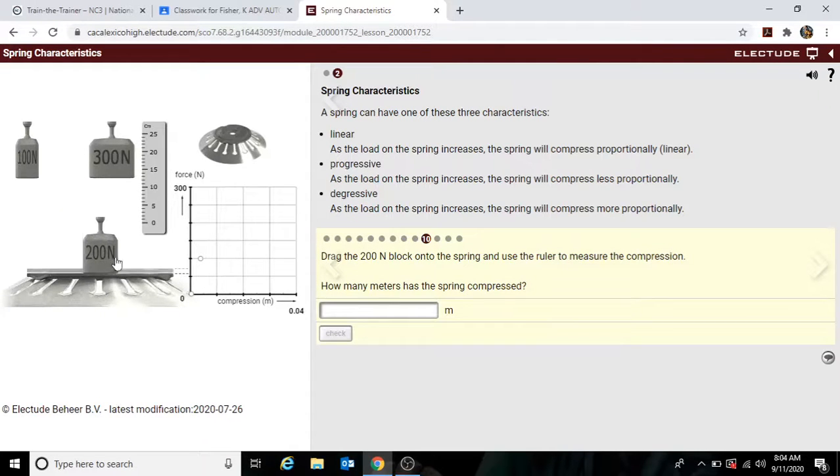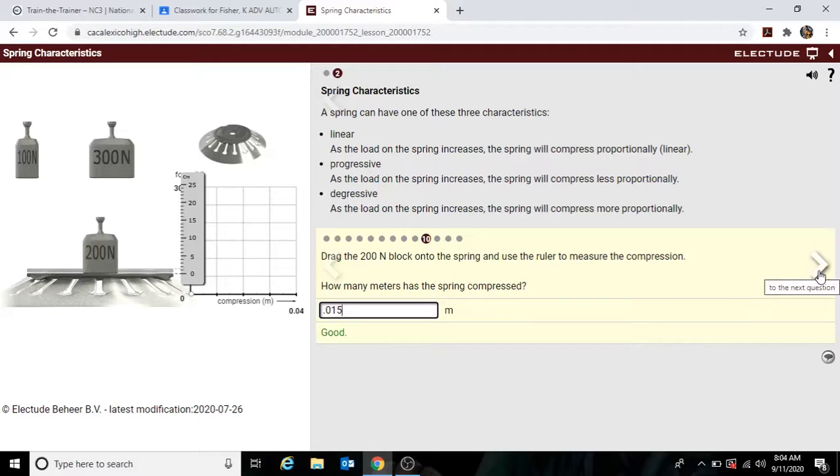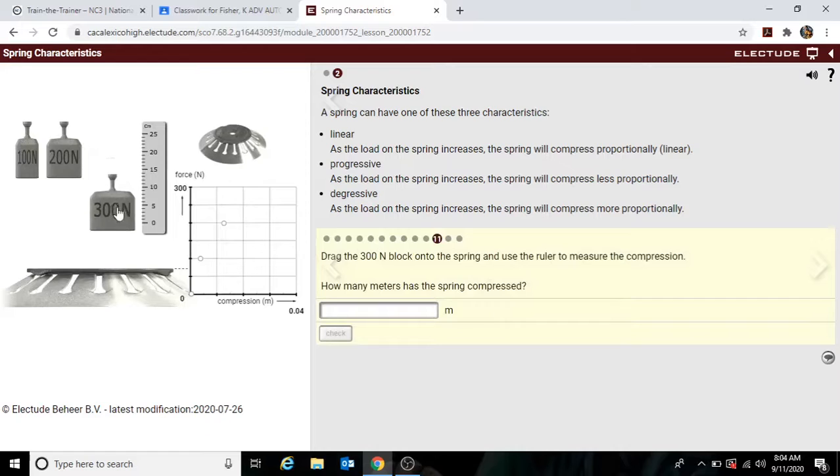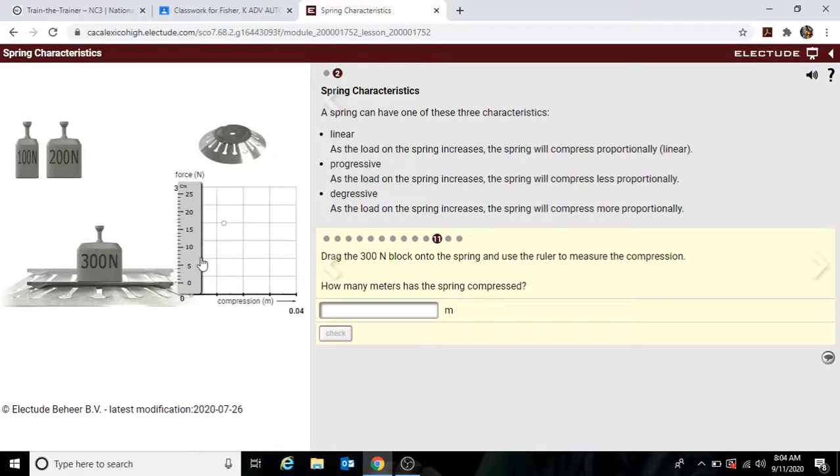Now let's measure 200 newtons. It looks about one and a half centimeters. So here we'd have to put in 0.015. Okay. Let's drop to 300. Pull our measurement. It looks like it's four. So 0.04. Let's check that. That's good.